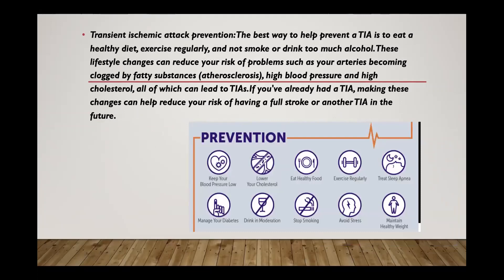Transient ischemic attack prevention: the best way to prevent TIA is to eat a healthy diet, exercise regularly, and not smoke or drink too much alcohol. These lifestyle changes can reduce your risk of problems such as your arteries becoming clogged by fatty substances, high blood pressure, and high cholesterol, all of which can lead to TIA. If you've already had a TIA, these changes can help reduce your risk of having a full stroke or another TIA.